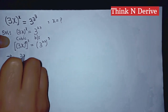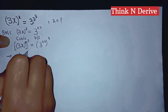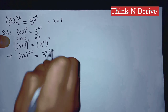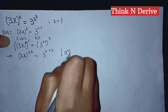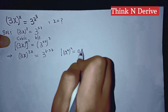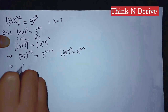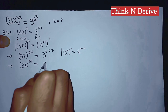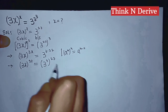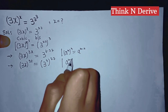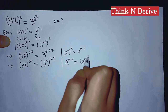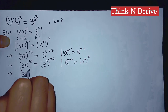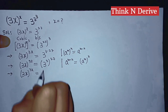So that is 3 to the power x to the power 3x, which can be written as 3 to the power 3 into 27, because a to the power m into n is equal to a to the power m times n. That is 3 to the power x to the power 3x equal to 3 to the power 3 into 27. Applying the same rule, that gives 3 to the power 3x equal to 3 to the power 81.